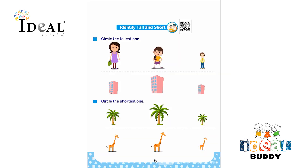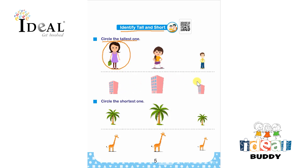Hello everyone. In this page the child will identify tall and short. Here they have to circle the tallest one. They have to observe the given pictures and circle the tallest one. In these three buildings, the tallest one is this one.